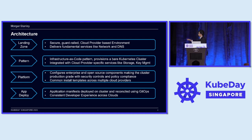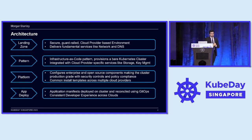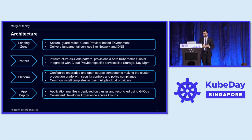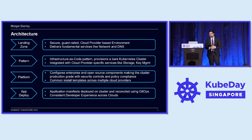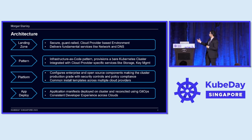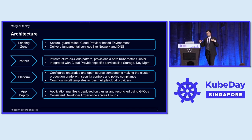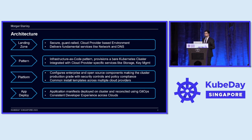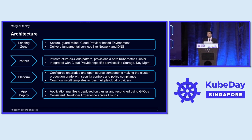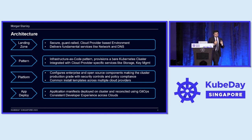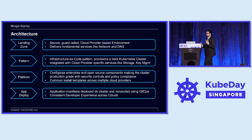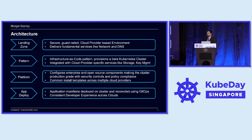Then comes the pattern, which is infrastructure-as-code-based blueprints that provision a bare Kubernetes cluster. As most of you who've used Kubernetes know, a Kubernetes cluster by itself is never fully sufficient. So as part of the pattern, we also build out cloud provider-specific storage services, key management services, monitoring, and much more. Above this infra layer is where we deploy the actual Kubernetes platform, which configures enterprise and open source components and makes your cluster production-grade with all security controls and policy compliance. We've also got a common install template that deploys all platform-level components across multiple cloud providers.